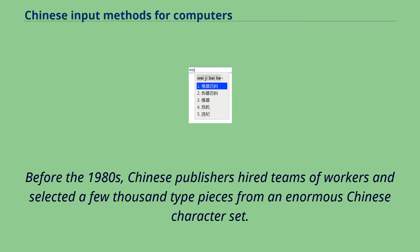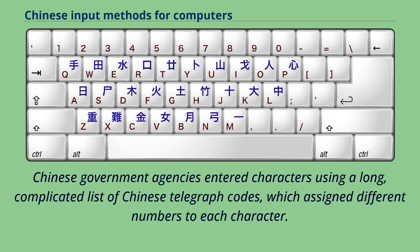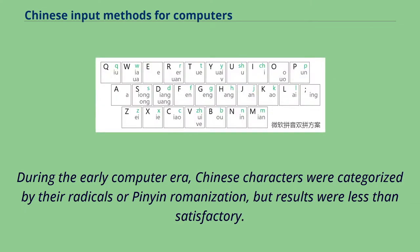Before the 1980s, Chinese publishers hired teams of workers and selected a few thousand type pieces from an enormous Chinese character set. Chinese government agencies entered characters using a long, complicated list of Chinese telegraph codes, which assigned different numbers to each character. During the early computer era, Chinese characters were categorized by their radicals or Pinyin romanization, but results were less than satisfactory.